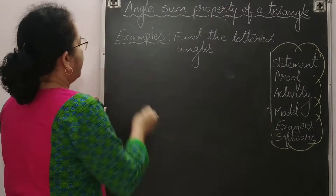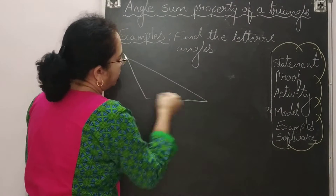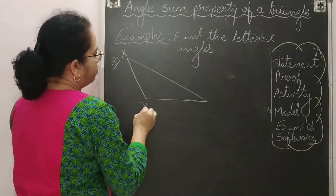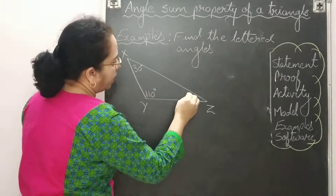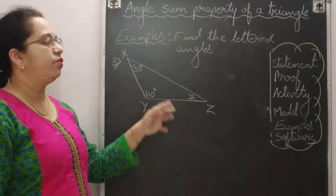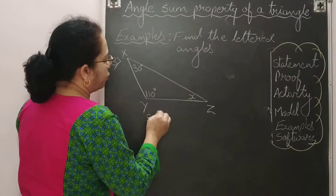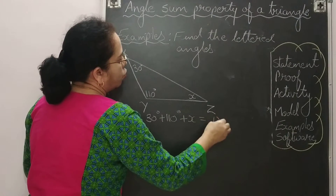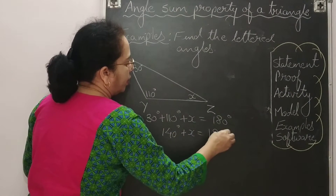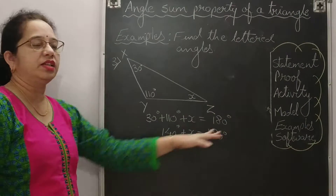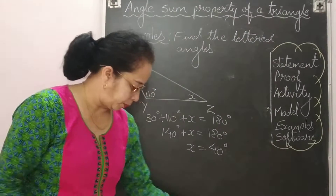Third example: an obtuse-angled triangle XYZ where one angle is 110 degrees and another is 30 degrees. Find X. By angle sum property, the sum of all three angles equals 180 degrees. Adding the known angles: 110 + 30 + X = 180, which gives 140 + X = 180. So X = 180 − 140 = 40 degrees.